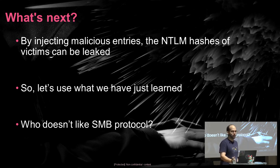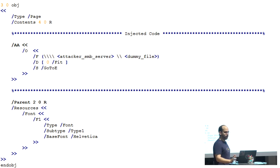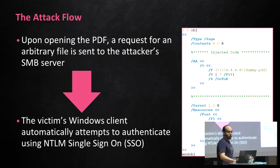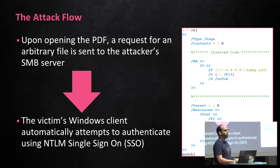Now we'll see how we can use this information to steal our victim's credentials. We've used an action dictionary with an O entry to get the exploit to execute upon opening the file. We then use the F, D, and S entries to point the PDF reader to an arbitrary file on our SMB server. Injecting these five entries into a page object is all we have to do to weaponize a previously benign PDF file. The remote file does not have to be a PDF file — it could be any file type, doesn't even have to have an extension, as long as it actually exists on the remote server. Also, while this example abuses the GoToE action, the GoToR (go to remote) action is just as vulnerable.